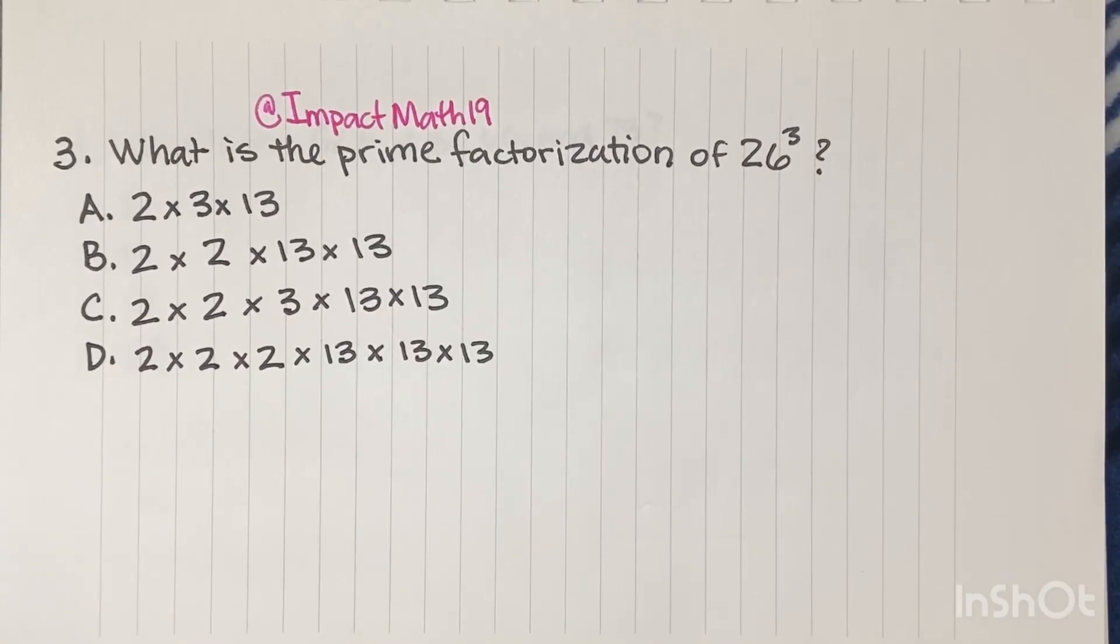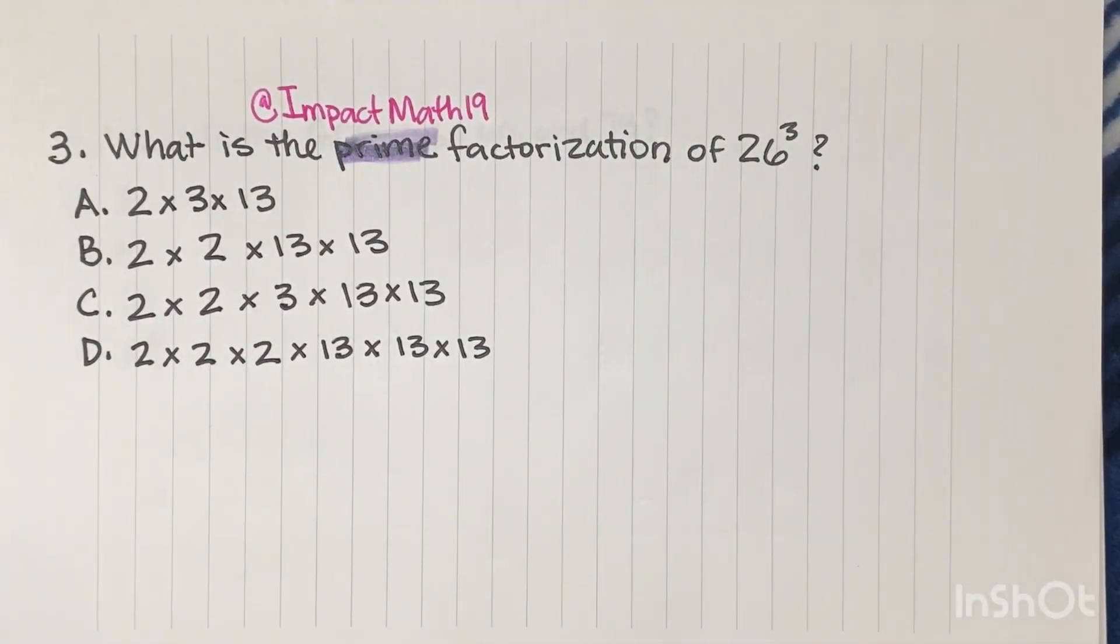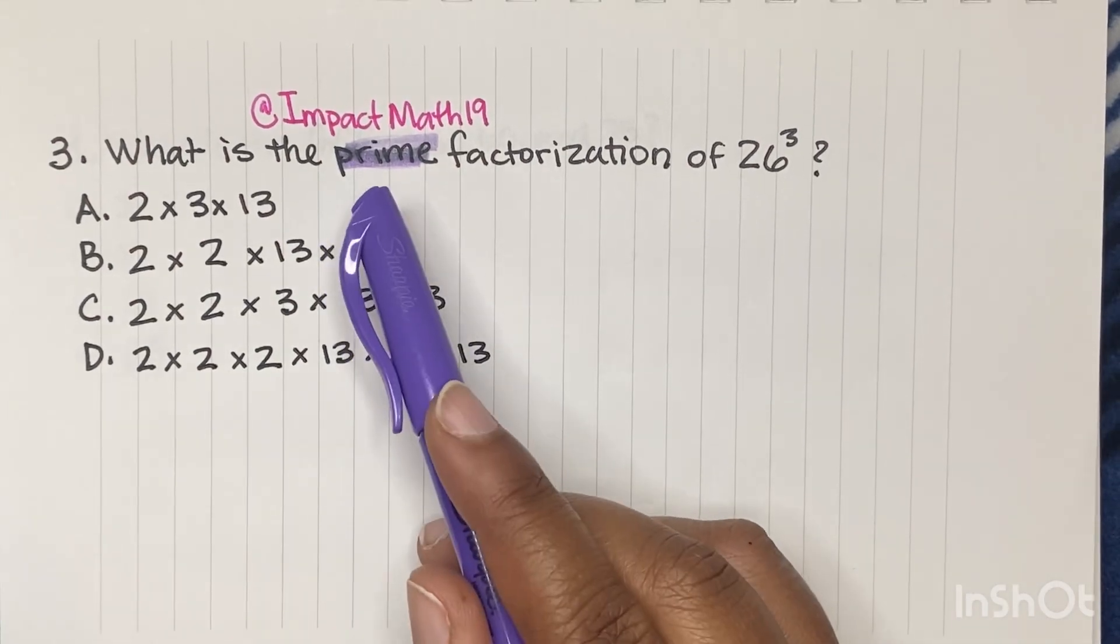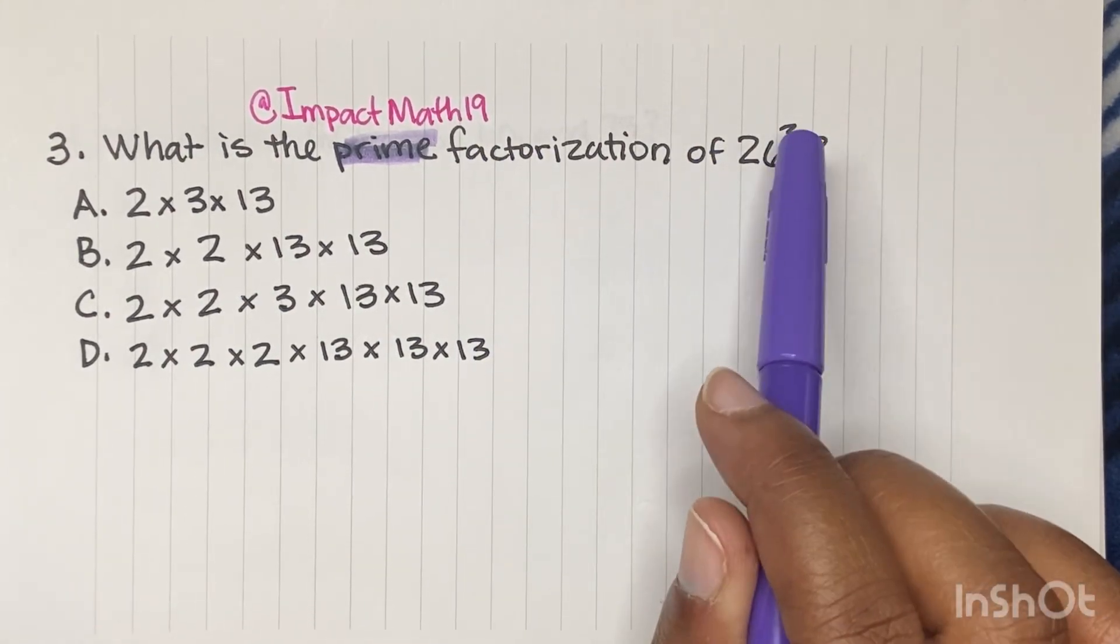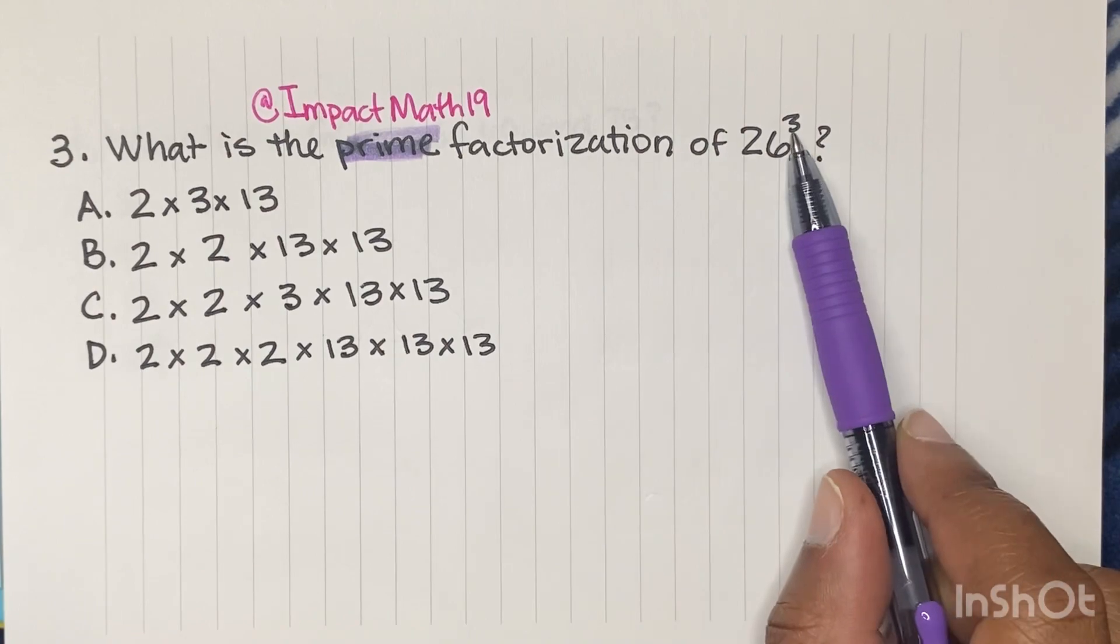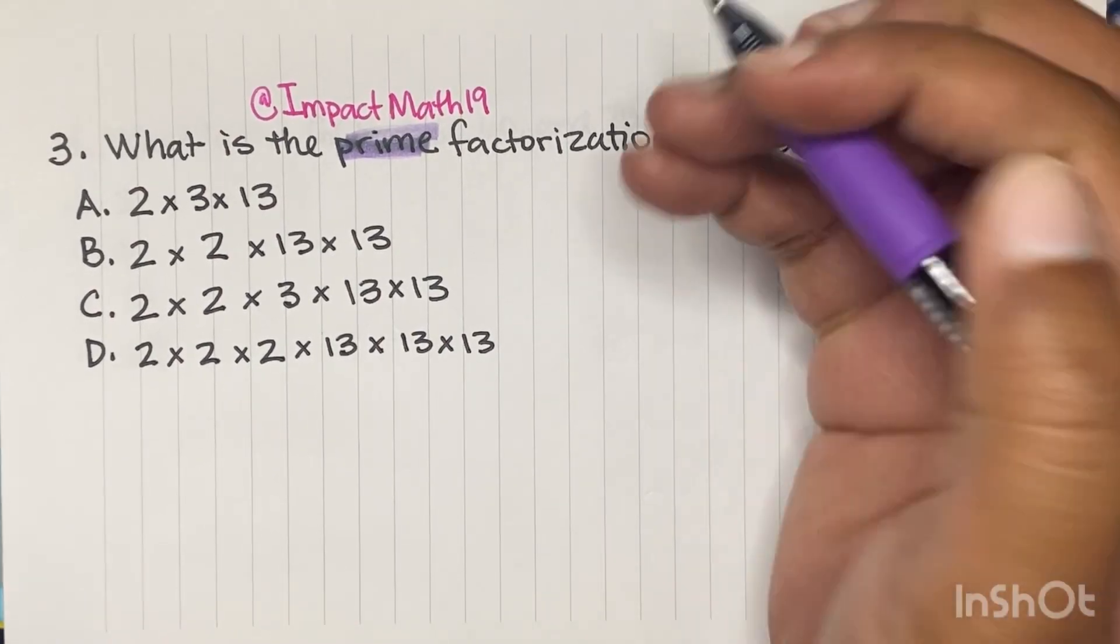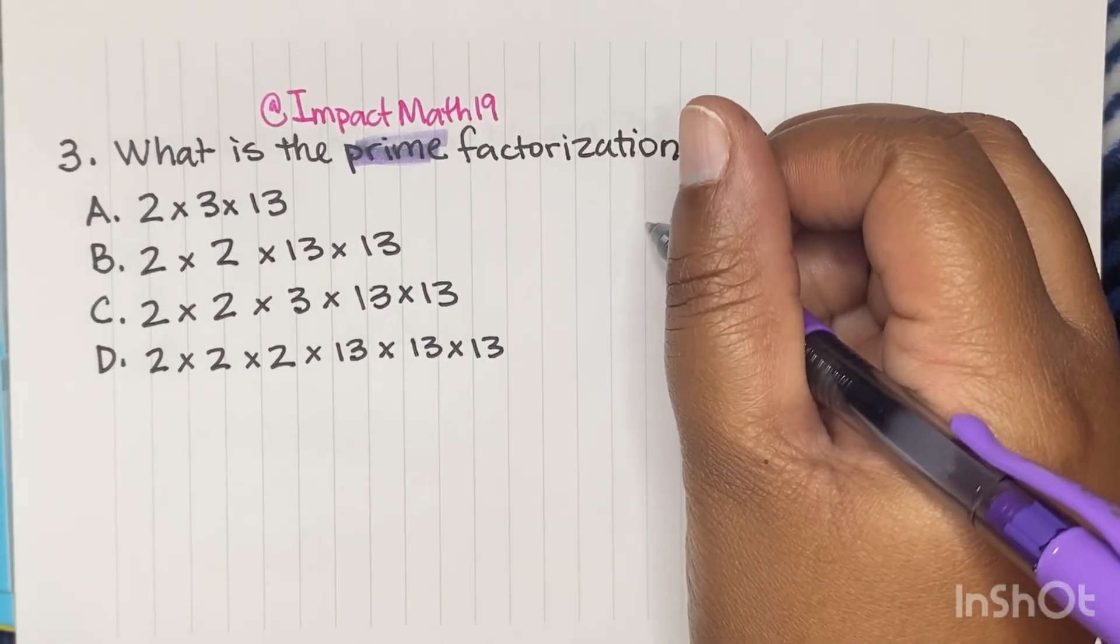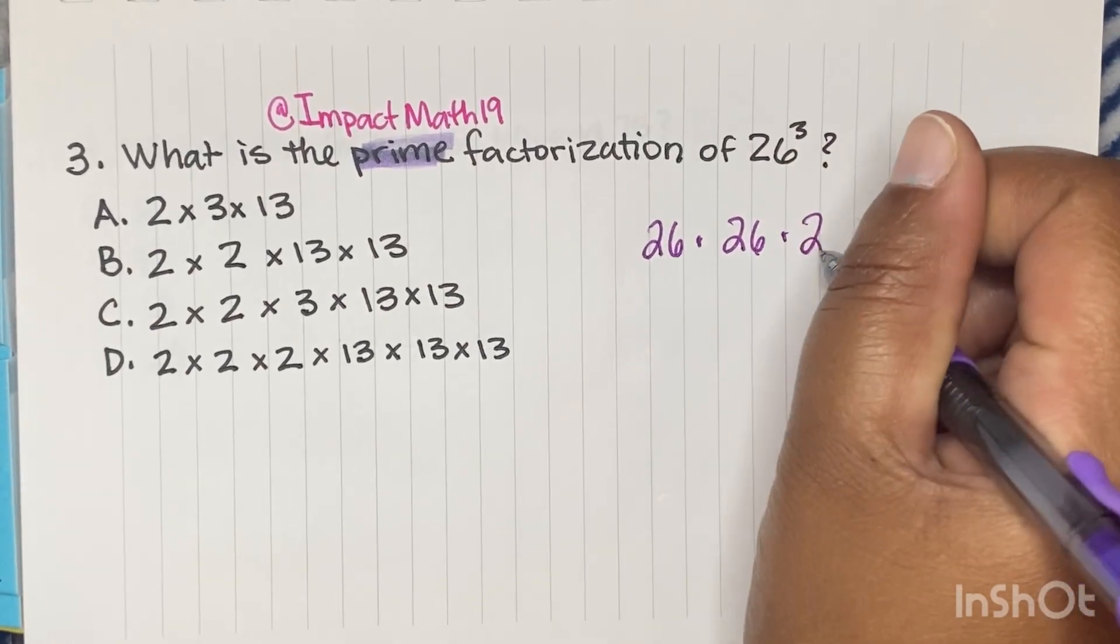All right. We talked a little bit about primes. So now number three asks us, what is the prime factorization of 26 to the third power. That's a key word right there. Prime. If you don't understand what a prime is, this problem becomes impossible. Remember, a prime is a number that only one and itself can go into. We also have to understand what exponents are, right? So if we get 26 to the third power, we're thinking about 26 times 26 times 26.